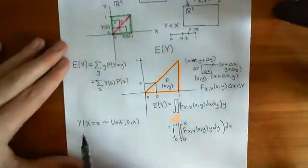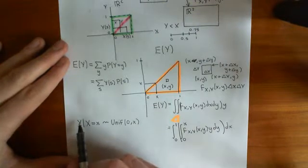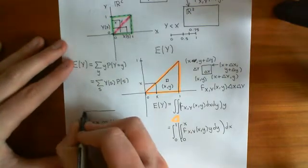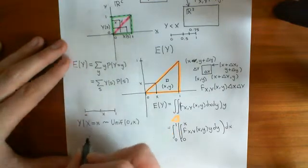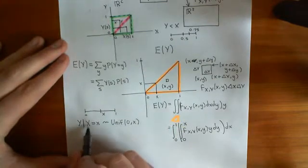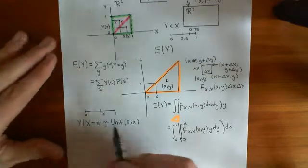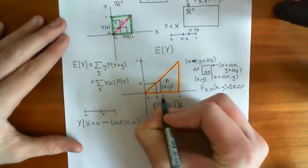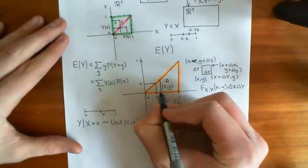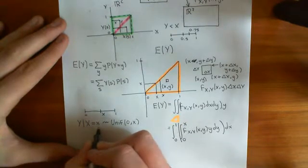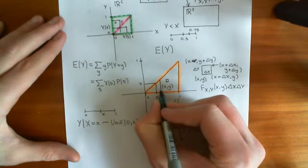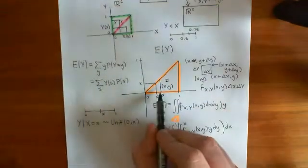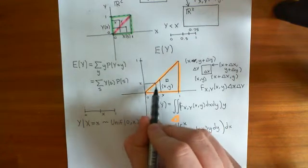If I restrict my attention to the event that the first break is at some value little x — so in this stick picture, I know the value of the first break — I'm saying just restrict your attention to the event that big X equals little x, i.e. the first break is at little x. In our triangle picture, if this is little x here, then this vertical line of points in the triangle corresponds to the event that the first break was at little x. All points on this line share the same first-break value, but their Y values — the second break — vary.